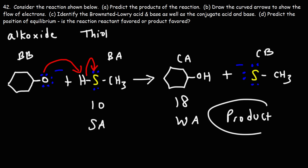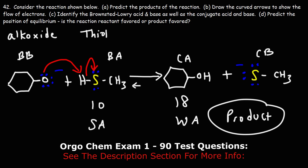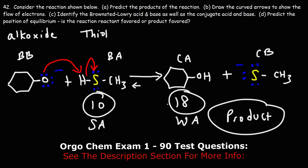To show that it's product favored, instead of one arrow we use two arrows — a bigger arrow to the right and a small arrow to the left. The big arrow indicates the position of equilibrium is further to the right. The difference in the sizes of the two arrows relates to the difference in the pKa values.